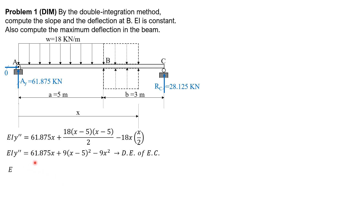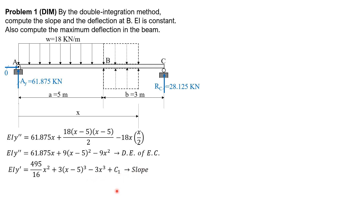Integrating once, we have EI y prime equals 495/16 x squared plus 3(x minus 5) cubed minus 3x cubed plus C sub 1. This is the slope at any point on the elastic curve.